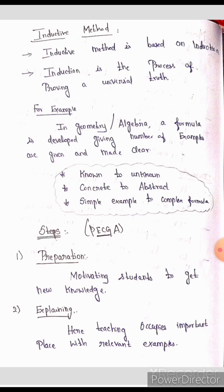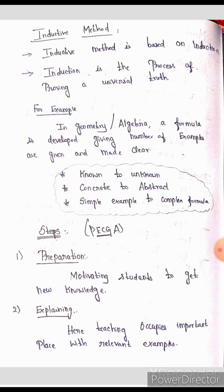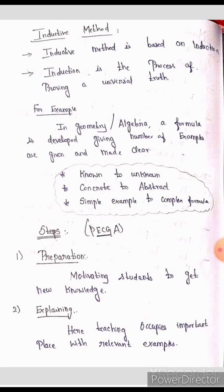Geometry is necessary; algebra is necessary. In the formula, the number of examples will be made clear. Step 1 is Preparation. Preparation means we should motivate the students so they will be able to develop new knowledge.